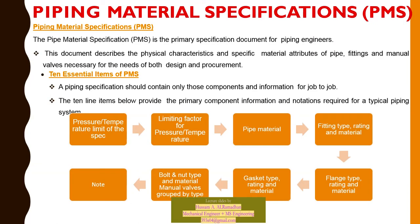Piping material specification (PMS) is the primary specification document for piping engineers. This document describes the physical characteristics of specific materials — pipe, fittings, manual valves — necessary for plant design and procurement. The ten essential items of PMS include: pressure-temperature rating limits; material type; flange type, rating and material; gasket type, rating and material; bolt and nut type and material; and manual valves grouped by type.